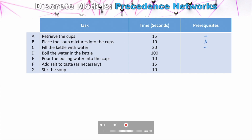Filling the kettle with water can be done without having retrieved cups or anything else, but to boil the water in the kettle we need to have filled it first — so this has a prerequisite of C. Now, pouring the boiling water into the cups technically requires retrieving the cups, placing the soup mixtures, and boiling the water, but we only list the immediate prerequisites. So the immediate prerequisites here are placing the soup mixtures into the cups and boiling the kettle of water. Tasks A and C are also prerequisites, but we don't list them here.